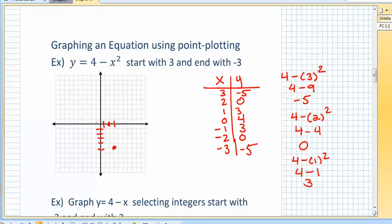Two, zero, one, three. One, three would actually be right there. And then zero, four. And then negative one, three, negative two, zero. And negative three, negative five. So it looks like this. It's a parabola. All right.